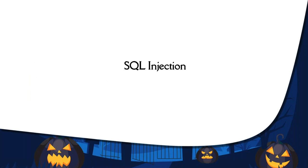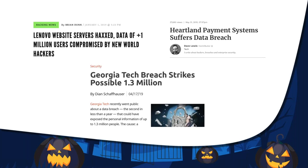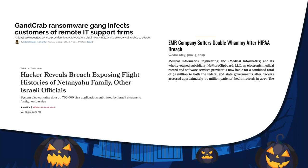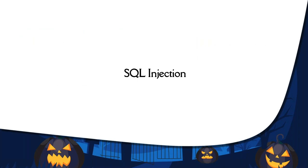Starting off with SQL injection, let me show you a few news headlines. Lenovo was hacked recently. Heartland Payment Systems was hacked around 2010 and it cost the organization about $300 million. Georgia Tech was attacked in April — 1.3 million people's personal information was released. Similarly, GAN Crab ransomware affected big organizations like TeamViewer and ConnectWise. Medical and government organizations were breached. And one thing was common among all of these attacks — SQL injection.